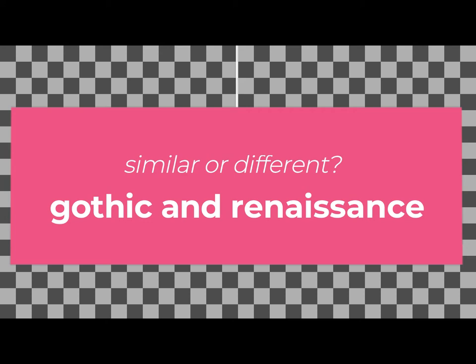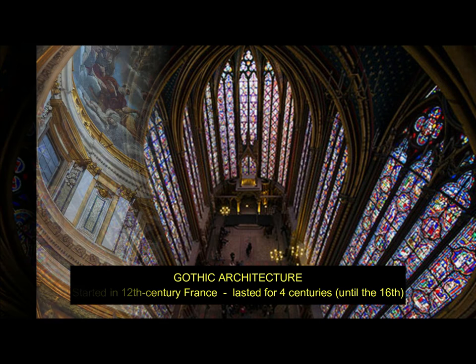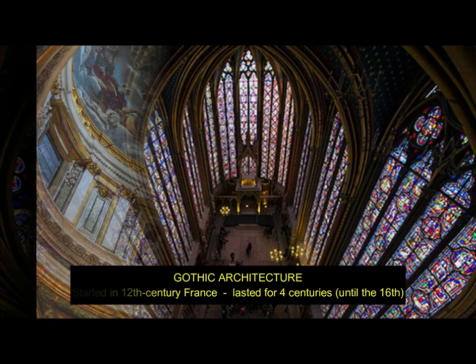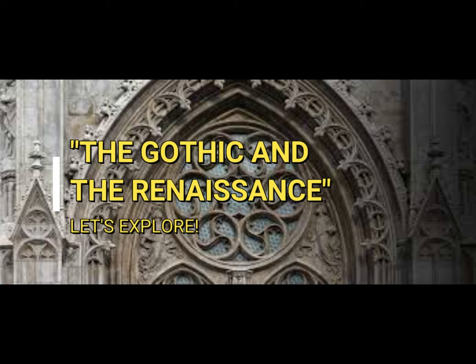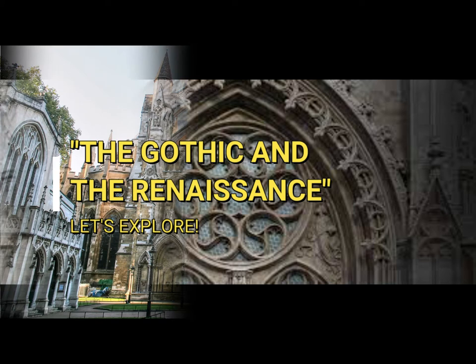When it comes to architecture, both of these movements can be considered as the comprehensive expression of culture in their own times. Gothic architecture started in 12th century France and lasted for four centuries. After that, Renaissance architecture took place from the 15th century until the 17th century, originating in Florence, Italy. Different time backgrounds, social cultures, religious beliefs, and different aesthetical standards are the main reasons that formed these two polar architectural styles, the Gothic and the Renaissance.